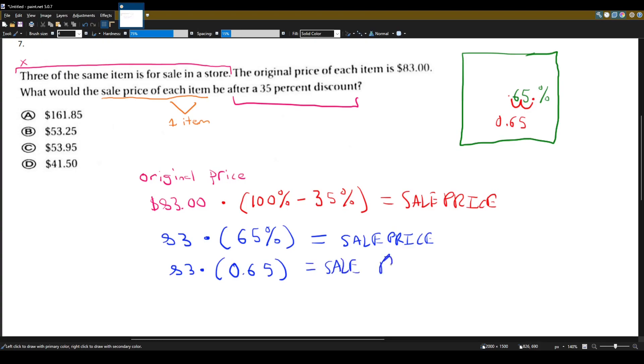Now I'm going to go into my calculator and I'm going to calculate what is 83 times 0.65. And I'm going to get 53.95. And that'll be answer choice C.